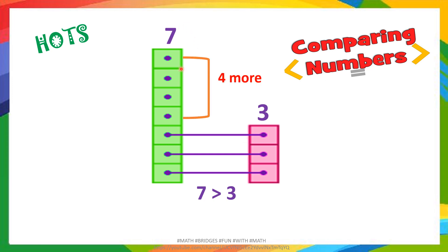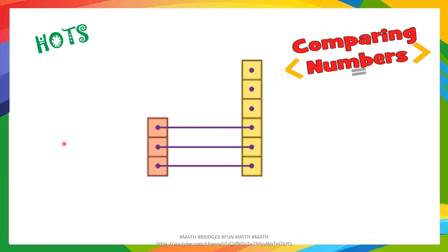You can question them by how much 7 is more. The child can visualize here itself. They can count 1, 2, 3, 4. So 7 is 4 more than 3. Here the concept of subtraction also comes. They can analyze by how much it is more than. You can give this kind of more sums.